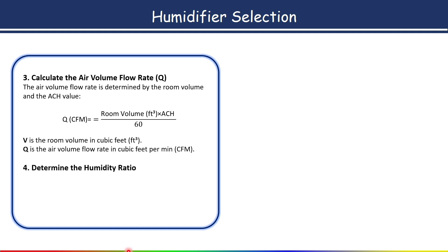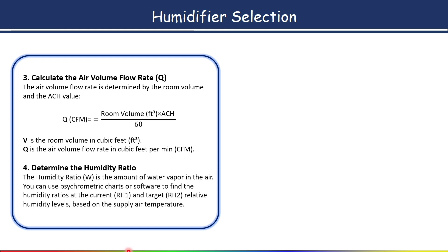Once you have the air volume flow rate, the next step is to determine the humidity ratio, also called specific humidity. The humidity ratio is the amount of water vapor in the air. You can use a psychrometric chart or psychrometric software to find the humidity ratio at both the current relative humidity and the target relative humidity, based on the supply air temperature. As per ASHRAE, it is best to maintain 50 percent relative humidity for human comfort.